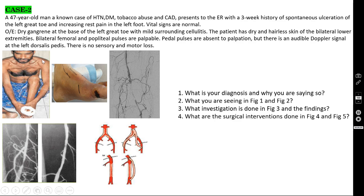Case number 2: a 47-year-old man, a known case of hypertension, diabetes, tobacco abuse, and coronary artery disease, presents to the emergency room with a three-week history of spontaneous ulceration of the left great toe and increasing rest pain in the left foot. You can see gangrene here. Vital signs are normal. On examination, there is dry gangrene at the base of the left great toe.